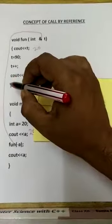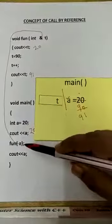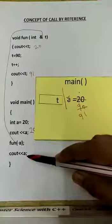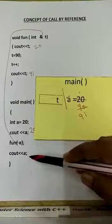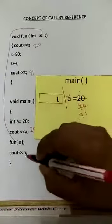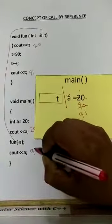The function gets over and we come back to the calling location and the next statement cout a is executed. When a is executed, we see that the value of a is also 91, so 91 will be printed.